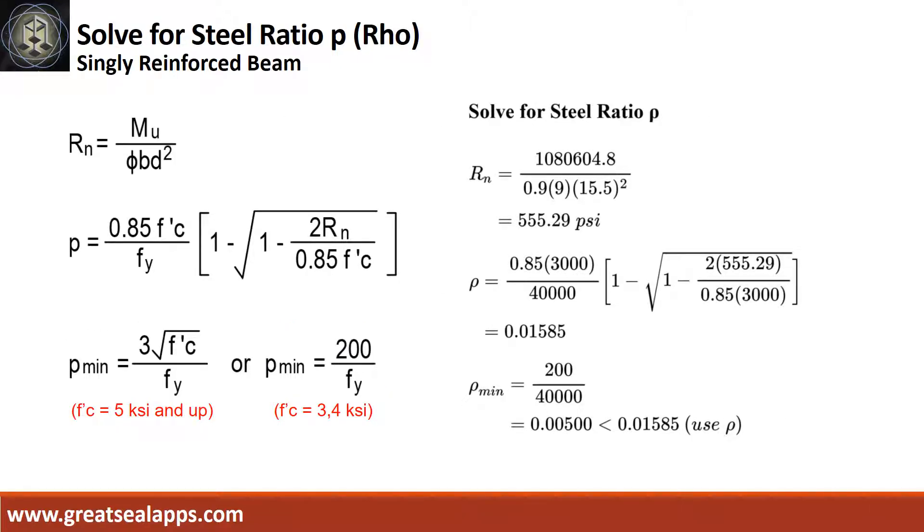Given MU equals 1,080,604.8, resistance factor equals 0.9, B equals 9, and D equals 15.5. The beam design ratio RN equals 555.29 psi and reinforcement ratio rho equals 0.01585.